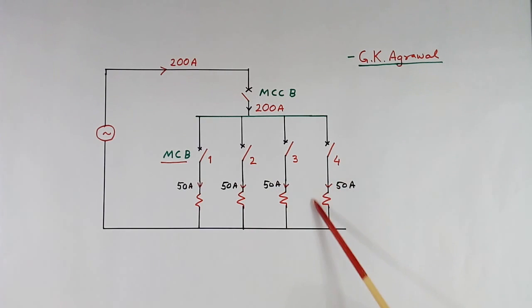Similarly, suppose some problem is here. Then this MCB will trip, and the others will work in a normal way.